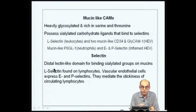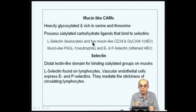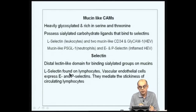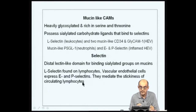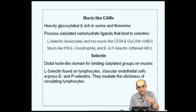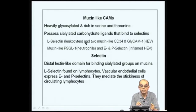Why selectins? Because selectins have a distal lectin-like domain with the ability to bind sialylated groups on these mucin molecules. Lectins are molecules you can isolate, for example, from moombin, soya bean, or peanut agglutinin — these are proteins that have the ability to bind carbohydrate, so they are also called lectins. L-selectin is found majorly on lymphocytes, while vascular endothelial cells express E-type and P-type selectins, which mediate the stickiness of the circulating lymphocyte.